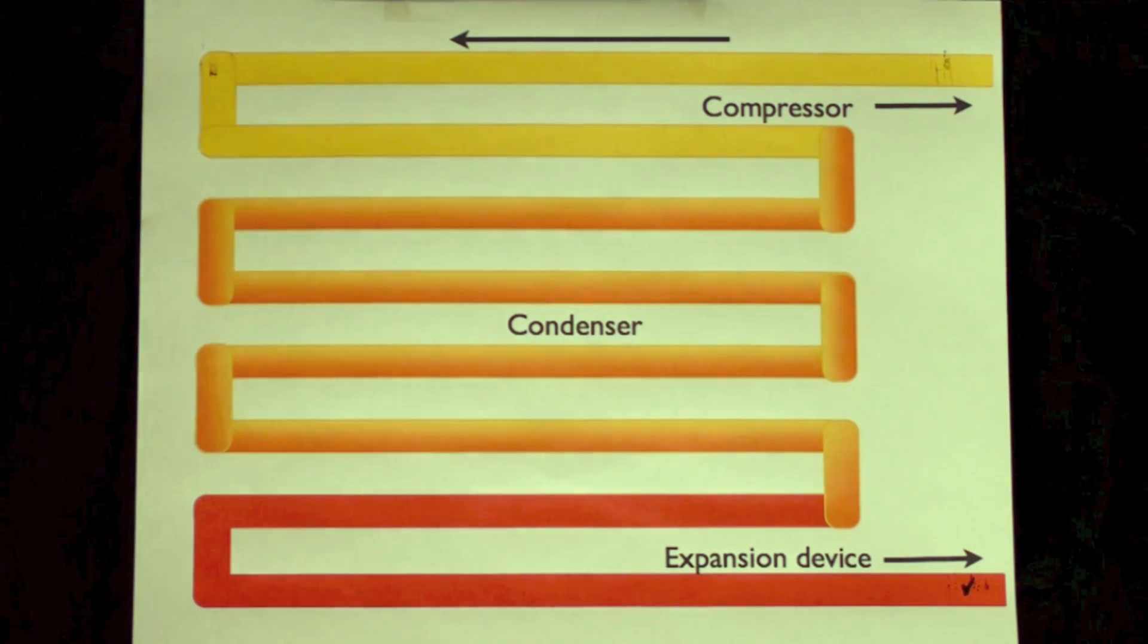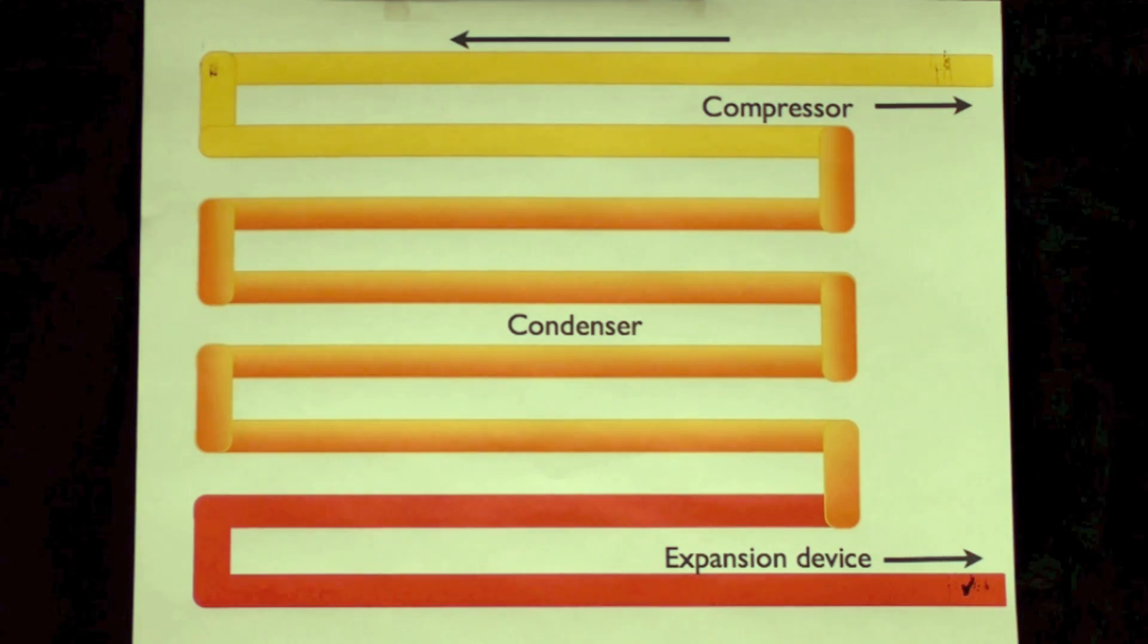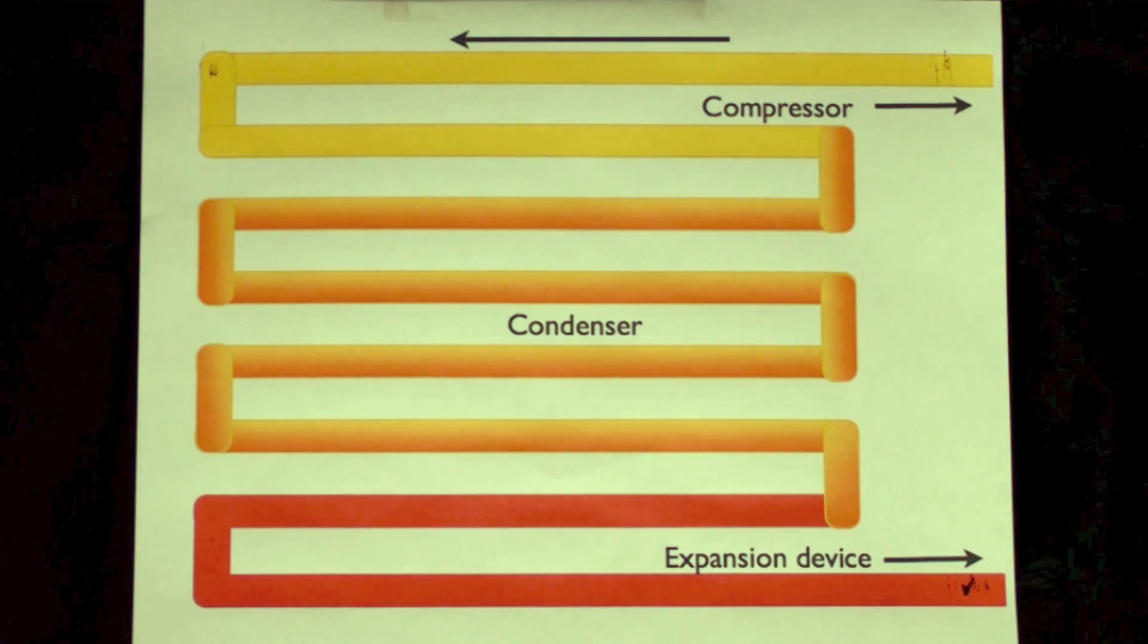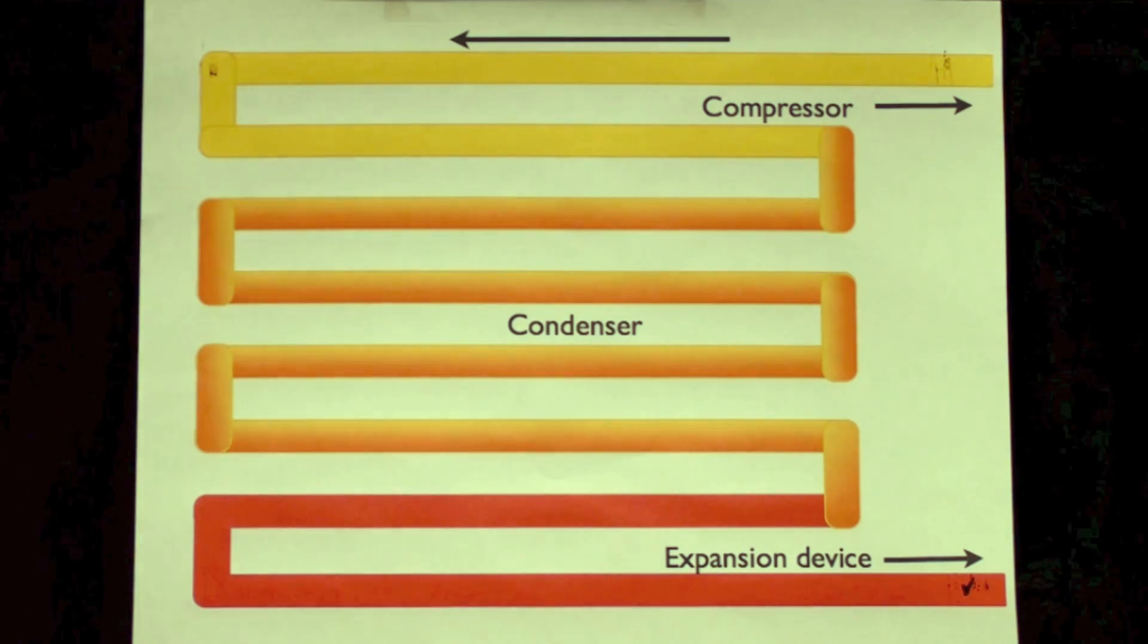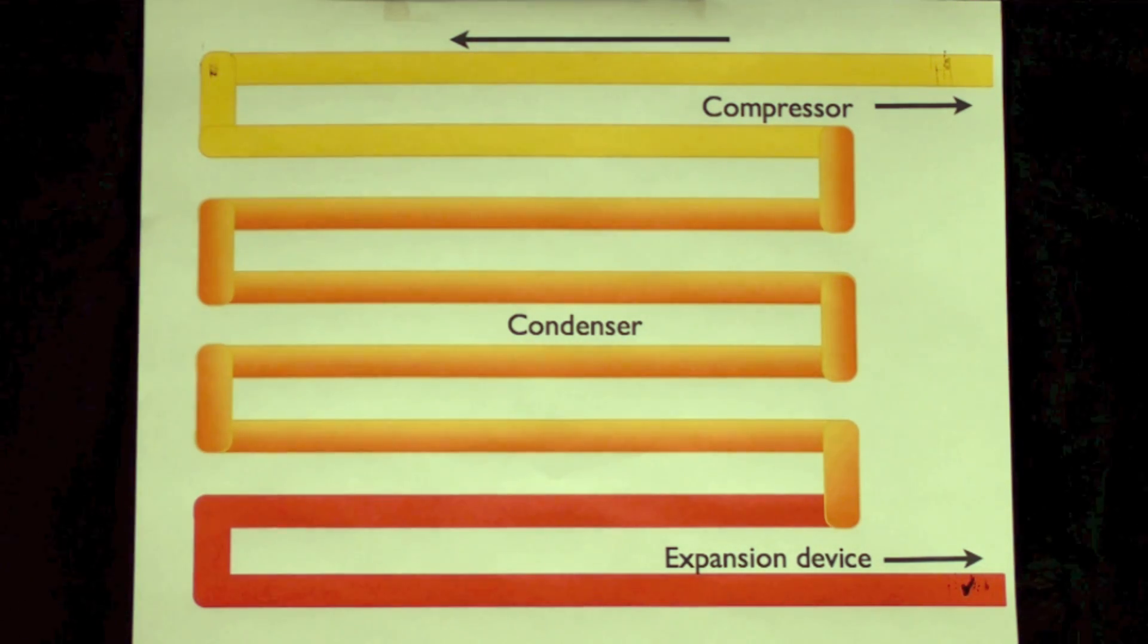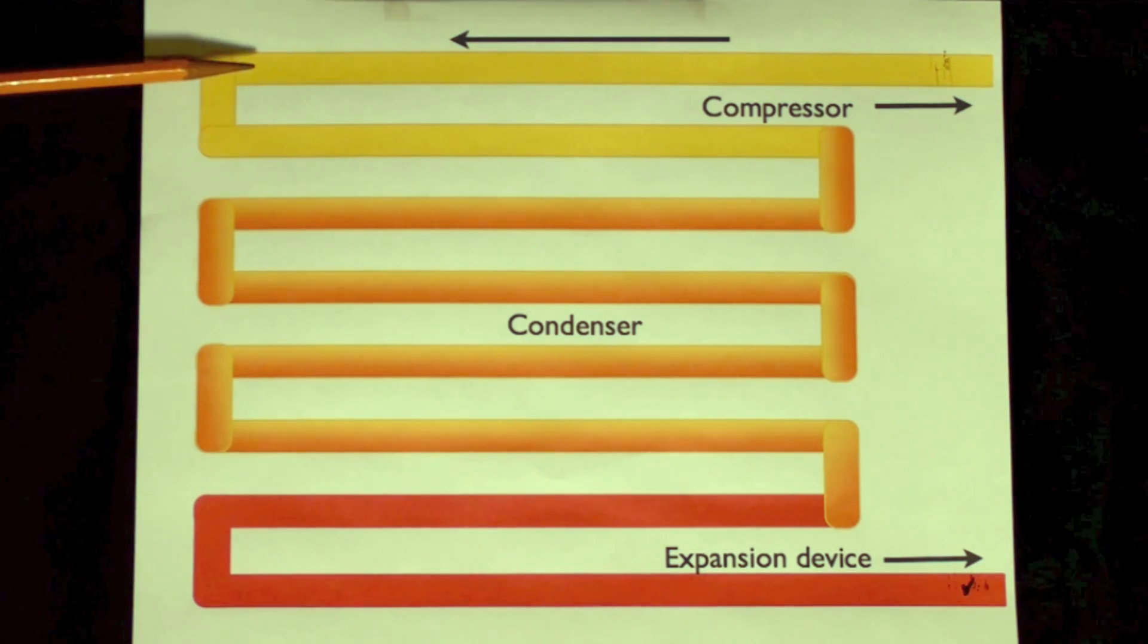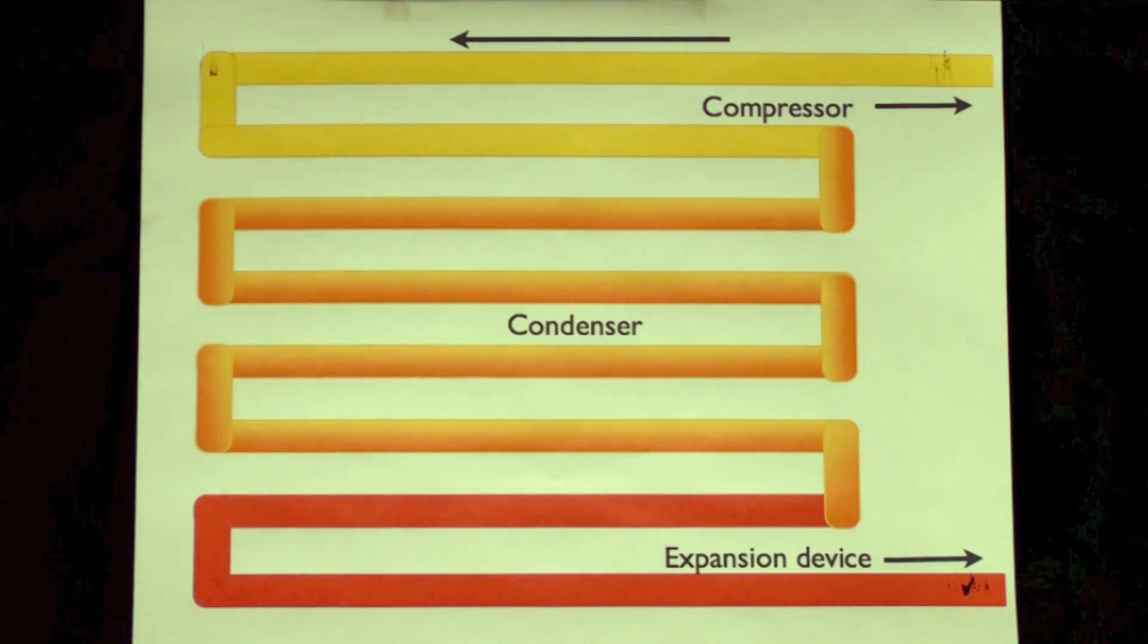One other thing on condensers: ideally a condenser would be about a quarter larger than the evaporator. In practice, it's really not done that way. But the reason being is when the compressor compresses the gas, it takes energy. That's why this gas is hot. This will usually burn you if you touch it as it comes out of the compressor.